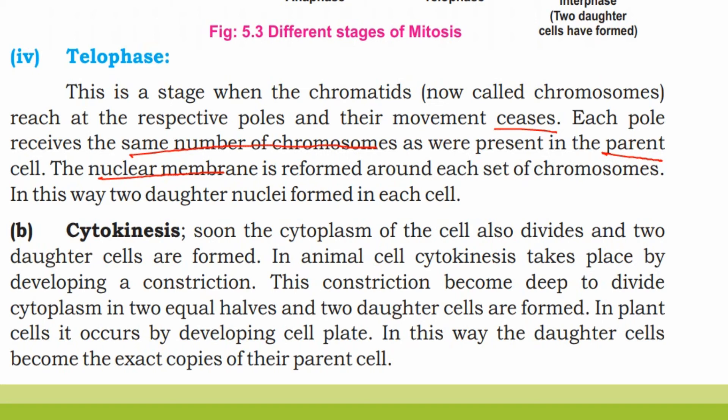Soon, the cytoplasm of the cell also divides and two daughter cells are formed. As nuclear division completes, the division of cytoplasm begins. In animal cells, cytokinesis takes place by developing a constriction.